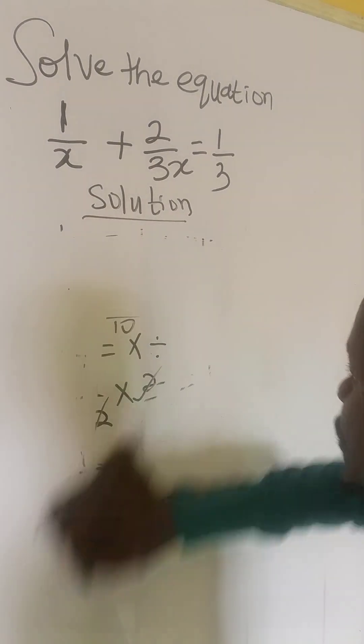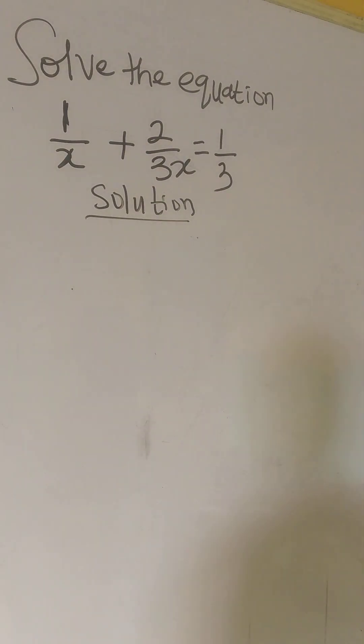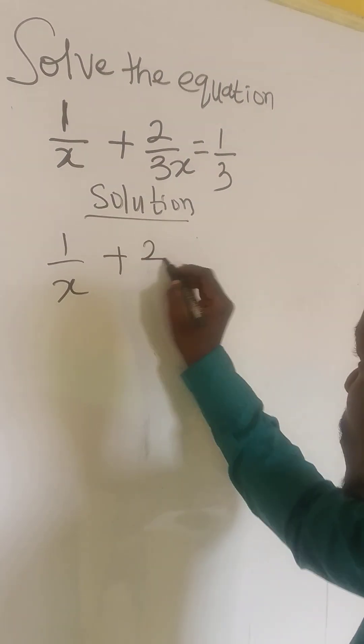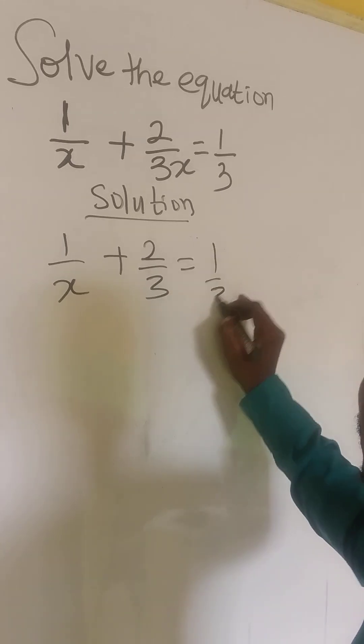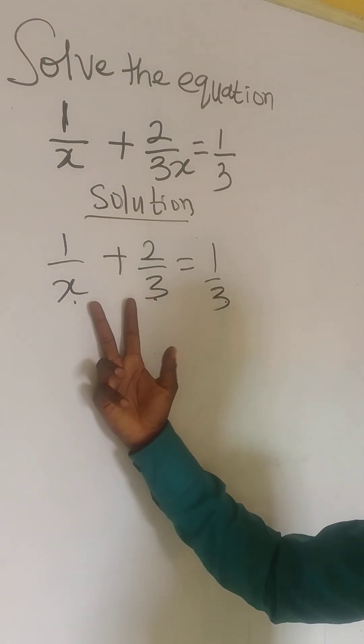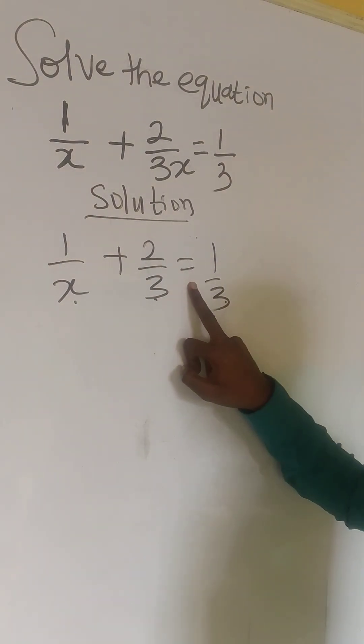From what I have explained, how can we now solve this? You will realize that there are three fractions here. One, two, three. And the first two are separated by addition and the two are separated by equal to sign.